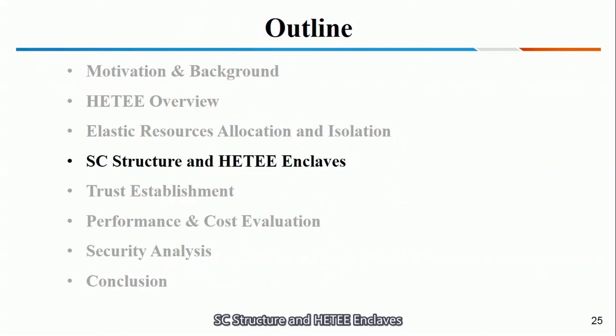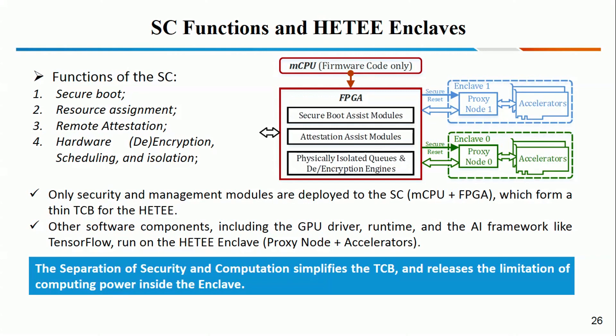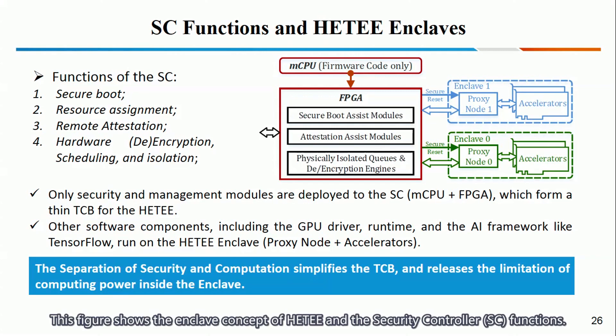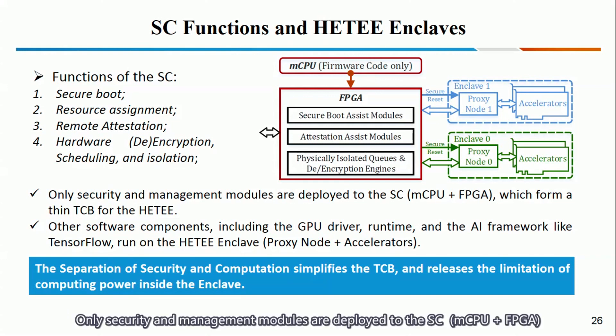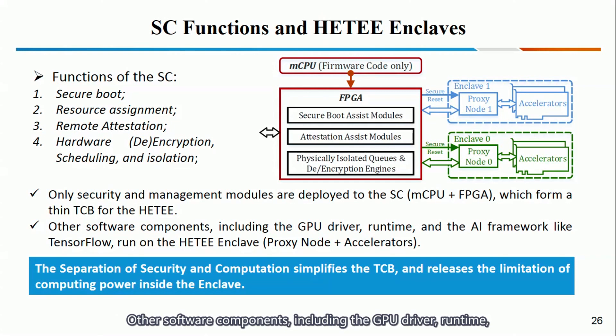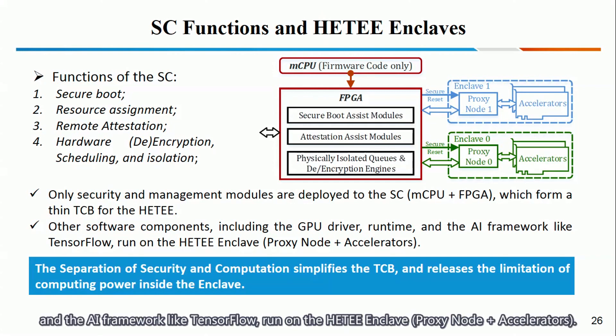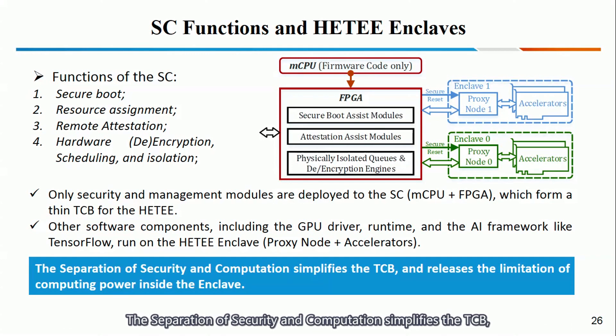SC structure and HDT enclave. This figure shows the enclave concept of HDT and the security controller functions. Only security and management modules are deployed to the SC, which is composed of an MCPU and FPGA. Other software components, including GPU driver, runtime, and AI frameworks like TensorFlow, run on the HDT enclave, which is composed of the proxy node and its accelerators. The separation of security and computation simplifies the TCB and releases the limitation on computing power inside the enclave.